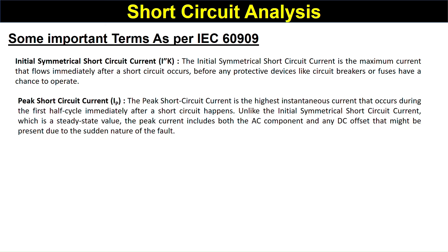The Peak Short-Circuit Current is the highest instantaneous current that occurs during the first half-cycle immediately after a short circuit happens. Unlike the Initial Symmetrical Short-Circuit Current, which is a steady-state value, the peak current includes both an AC component and a DC offset that may be present due to the sudden onset of the fault. It has two components: the AC component and the DC component.